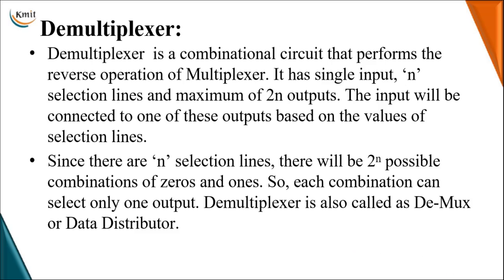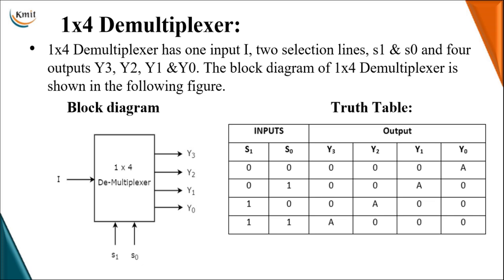Each combination of the selection lines can route the single input terminal to one particular output terminal at a time. This is also called a DEMUX in short form, where single data is distributed through multiple output terminals. Hence, the demultiplexer is called a data distributor.